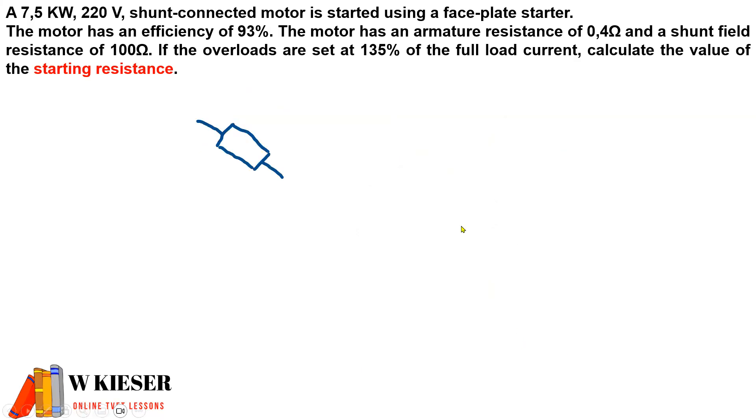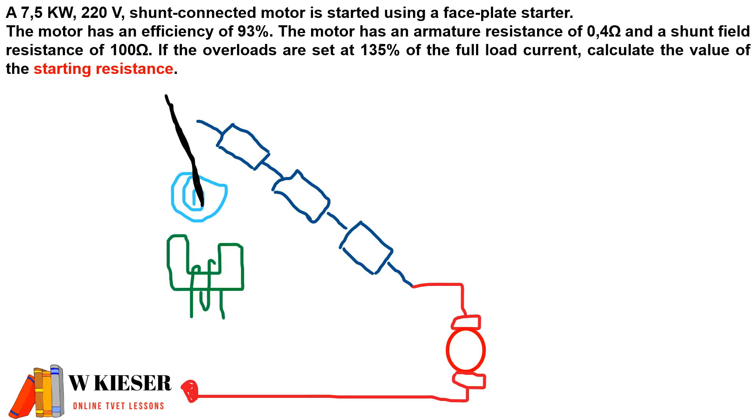A reminder of the construction and operation of a faceplate starter. It has three resistors connected in series to the armature assembly of the machine. We have the position arm which is in the off position. We have the no volt relay and the overload relay which are our protection devices.